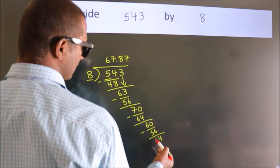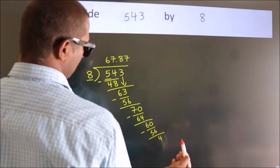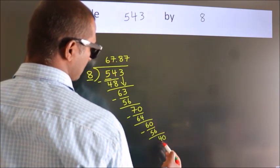After this, we already have the decimal, so directly take 0. So 40.